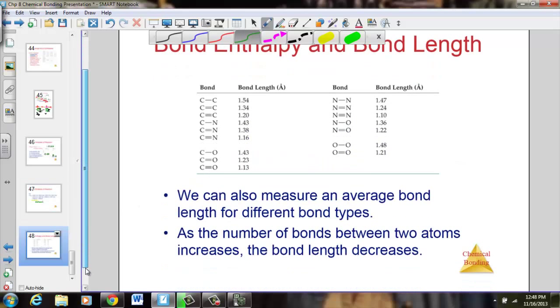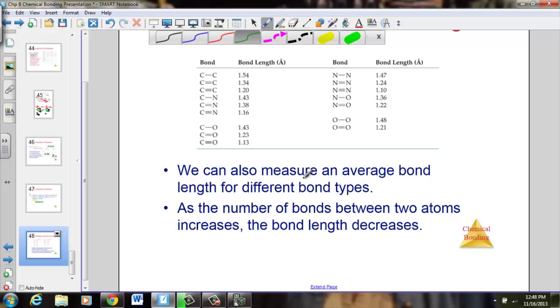Bond enthalpy. Keep in mind, as we measure average bond length for different types of bonds, it takes more and more energy to break apart triple bonds compared to single bonds. Triples are stronger than doubles, which are stronger than singles. As the number of bonds between two atoms increases, the bond length decreases, and it becomes increasingly more difficult to break the bond.